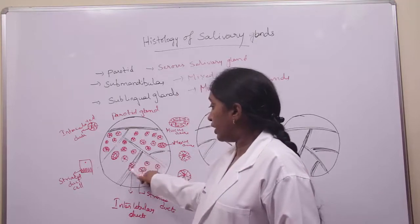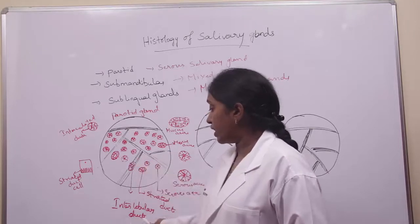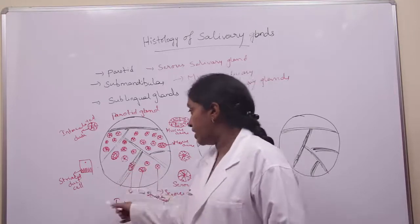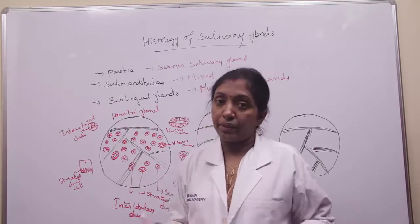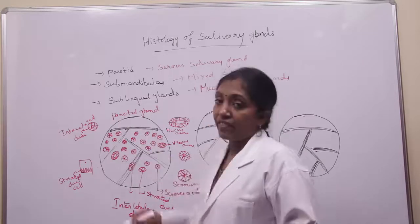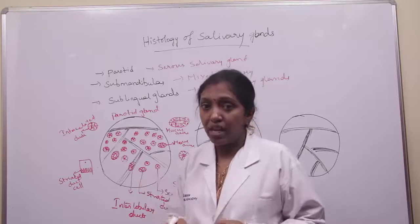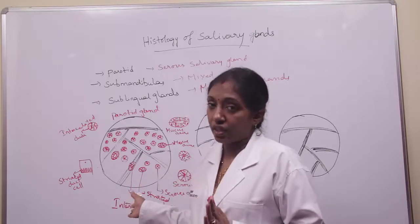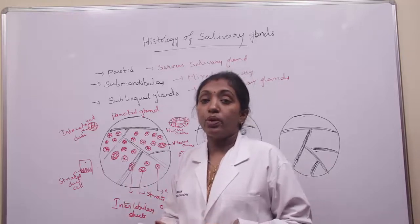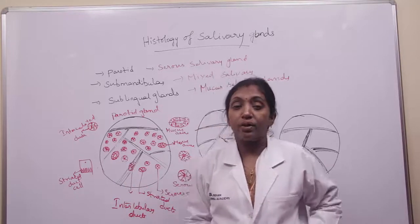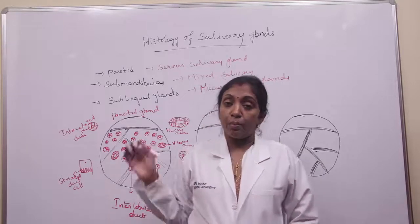In the connective tissue trabeculae, you will be able to see the interlobular ducts, which are lined by simple columnar epithelium. All the salivary glands are heterocrine glands because they consist of both serous acini and mucous acini — but in the parotid gland, the mucous acini are less compared to the serous acini, so serous acini are much more dominant. That's why the parotid gland is an example of a serous salivary gland.